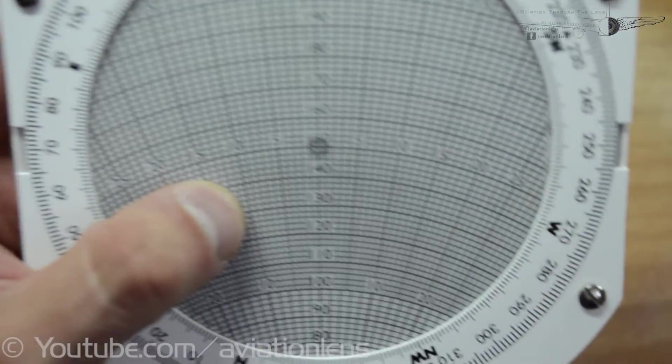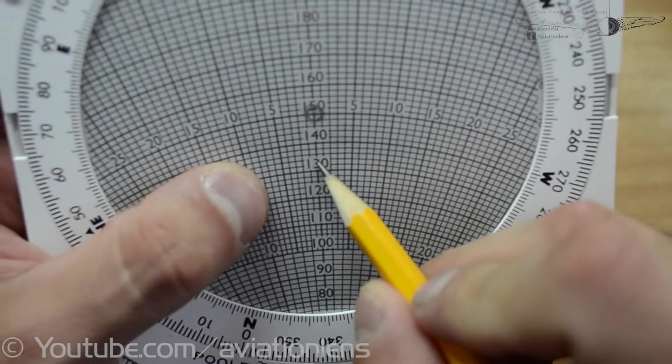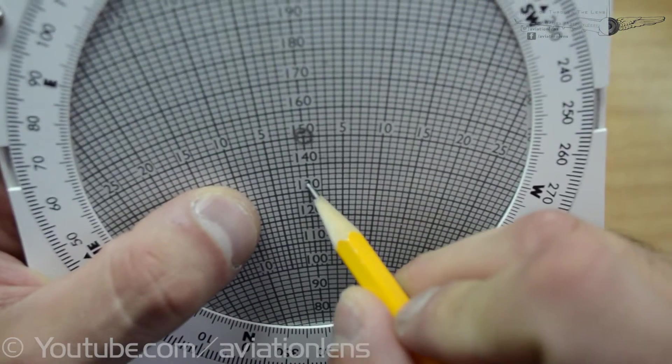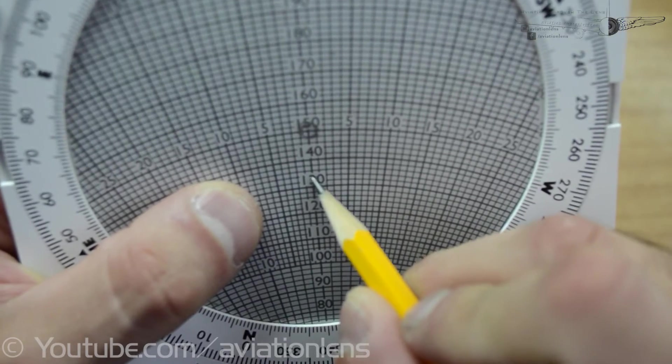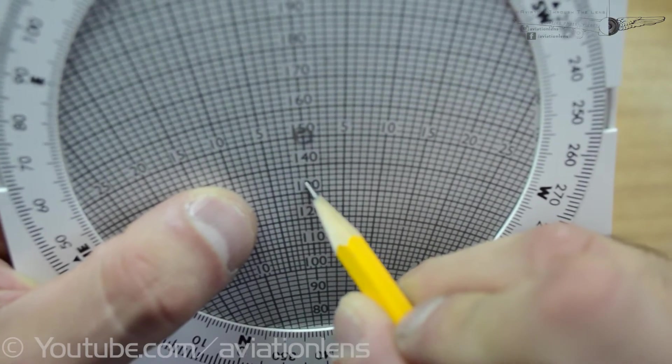We have 18 knots, so 18 somewhere here. So I'm gonna draw a little dot here.